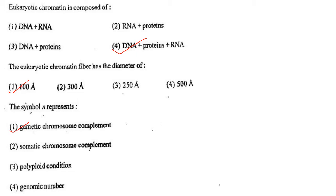Next one: The eukaryotic chromatin fiber has the diameter of option 1, 100 Angstrom; option 2, 300 Angstrom; option 3, 250 Angstrom; option 4, 500 Angstrom. Answer is option 1: 100 Angstrom.